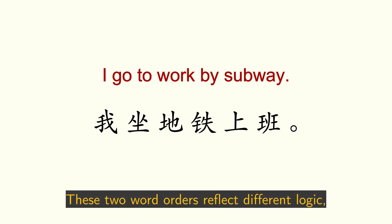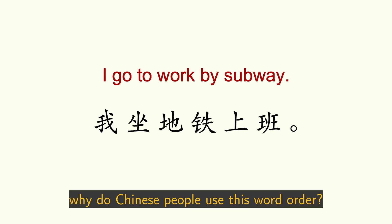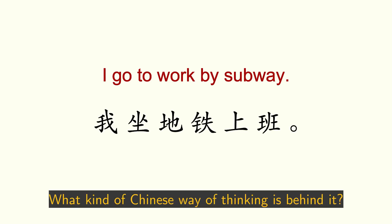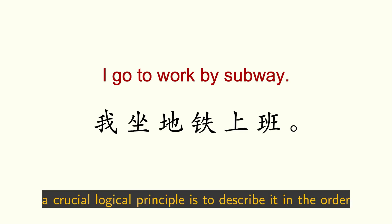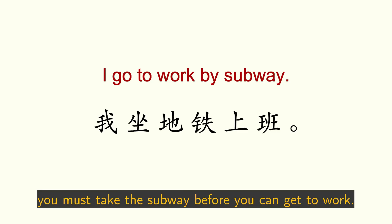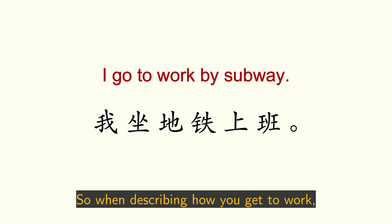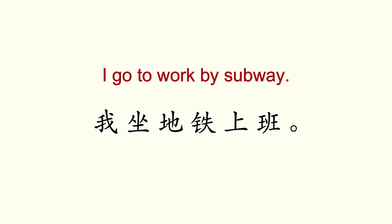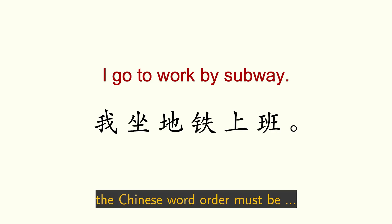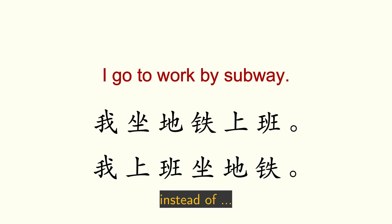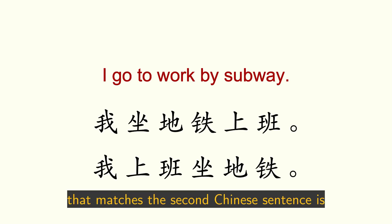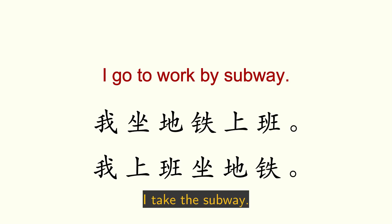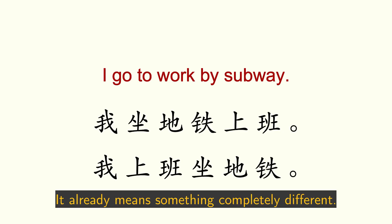These two word orders reflect different logic. Why do Chinese people use this word order? What kind of Chinese way of thinking is behind it? When the Chinese describe an event in one sentence, a crucial logical principle is to describe it in the order in which it happened. You must take the subway before you can get to work. So when describing how you get to work, the Chinese word order must reflect that sequence. Because the English translation that matches the reversed Chinese sentence would be 'After I get to my working place, I take the subway' — which already means something completely different.